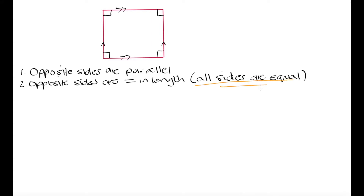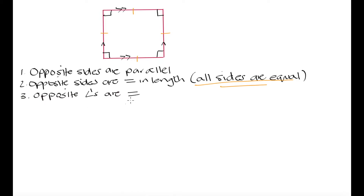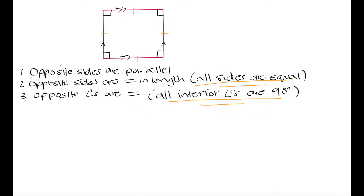As we saw with the rhombus, this will also hold true for the square, meaning all four sides are of equal length. In parallelograms we saw that opposite angles were equal, and this is also true for the rhombus and the square, except in our square all of our interior angles are 90 degrees — all interior angles are right angles.